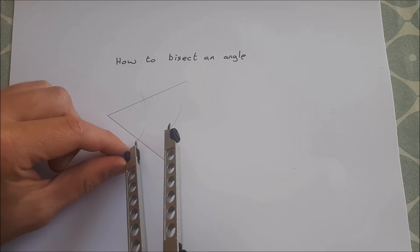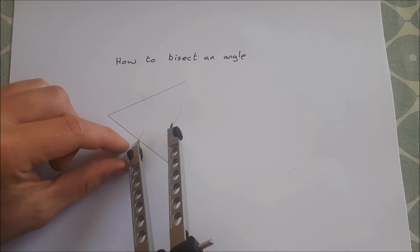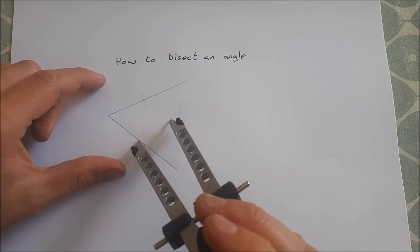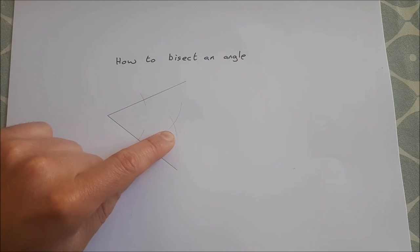Move the point of your compass then down to the other point of intersection and you draw a new arc, so now we have two arcs that are intersecting.